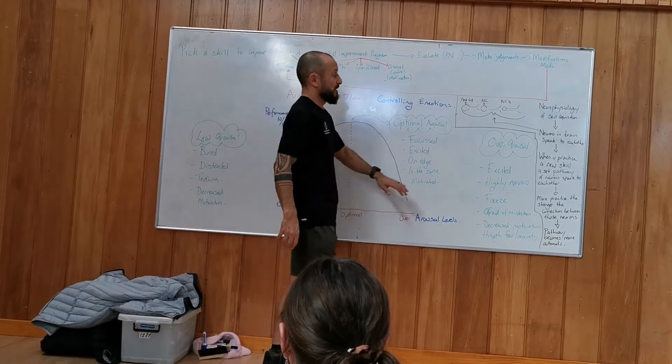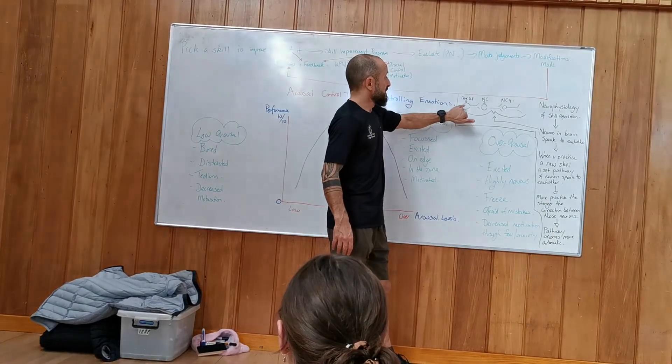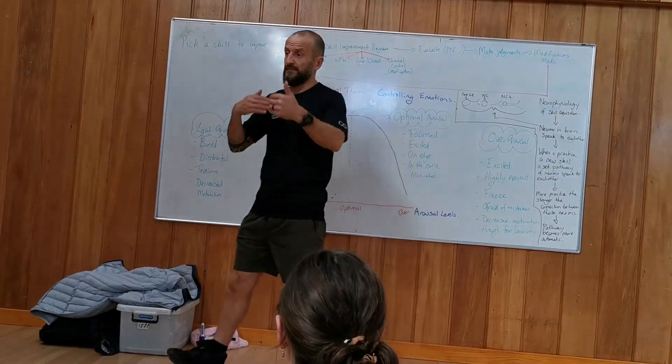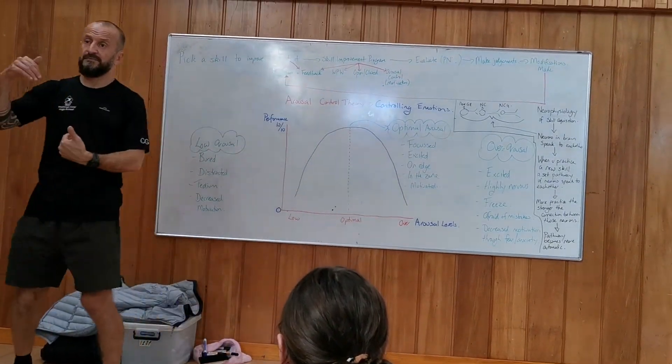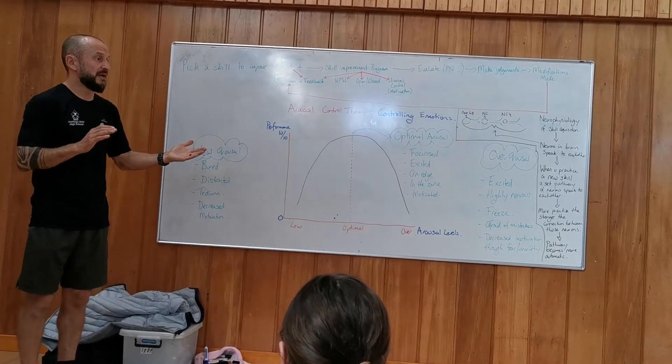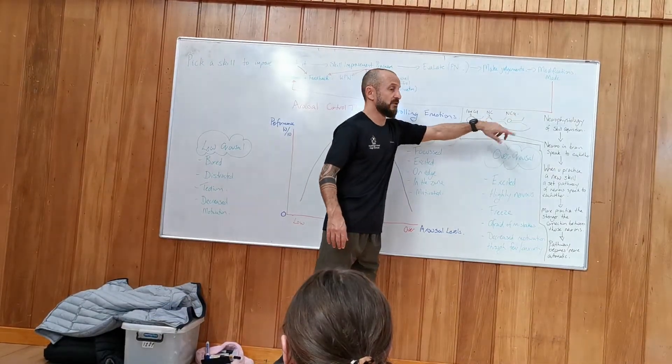When you practice a new skill or start a new skill, what happens is it starts firing up a particular pathway of neurons. And each skill is unique. They might be similar, but generally they are all unique. At first, when you learn it, they're a little bit rusty. The communication between the neurons is rusty.